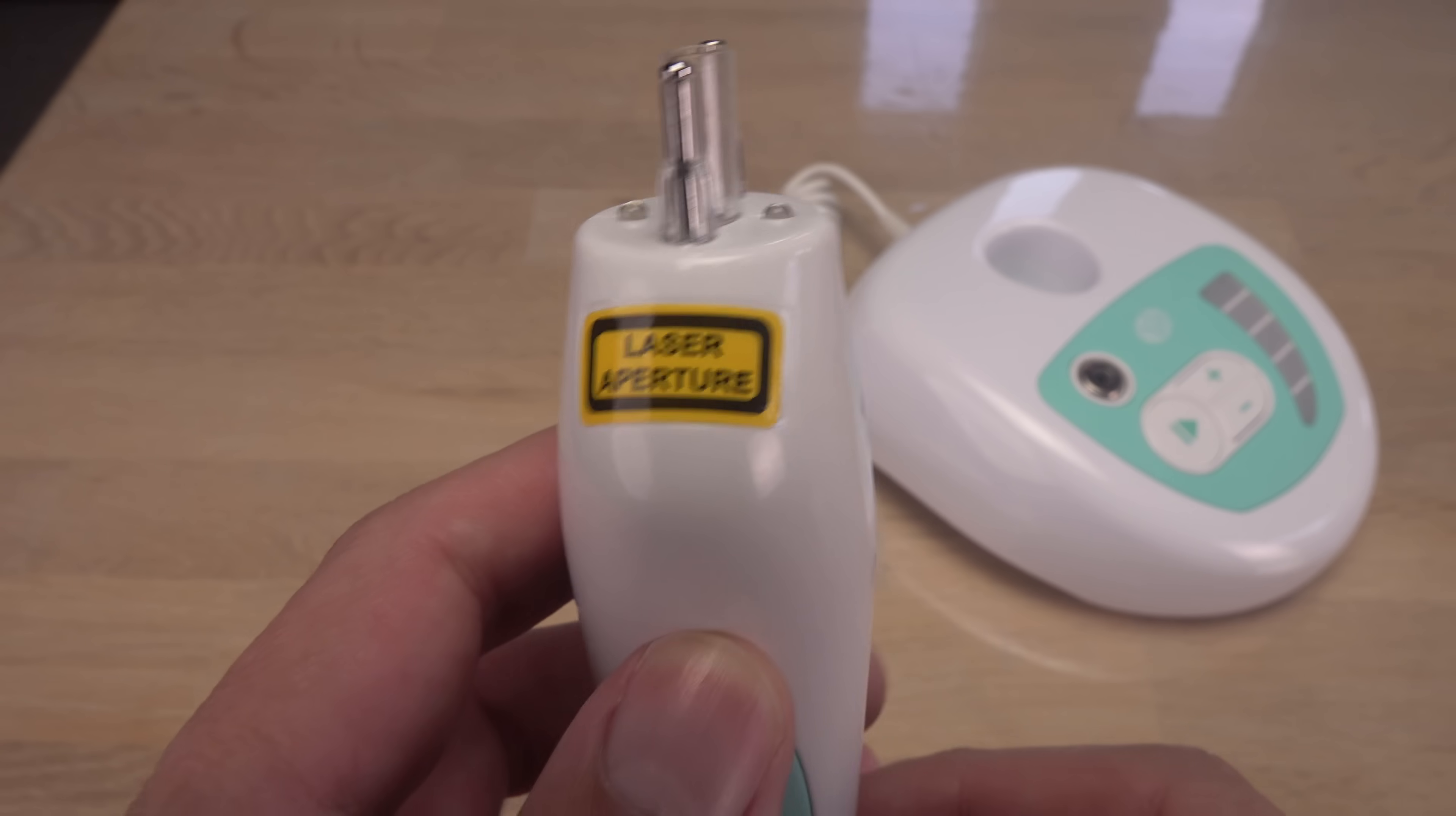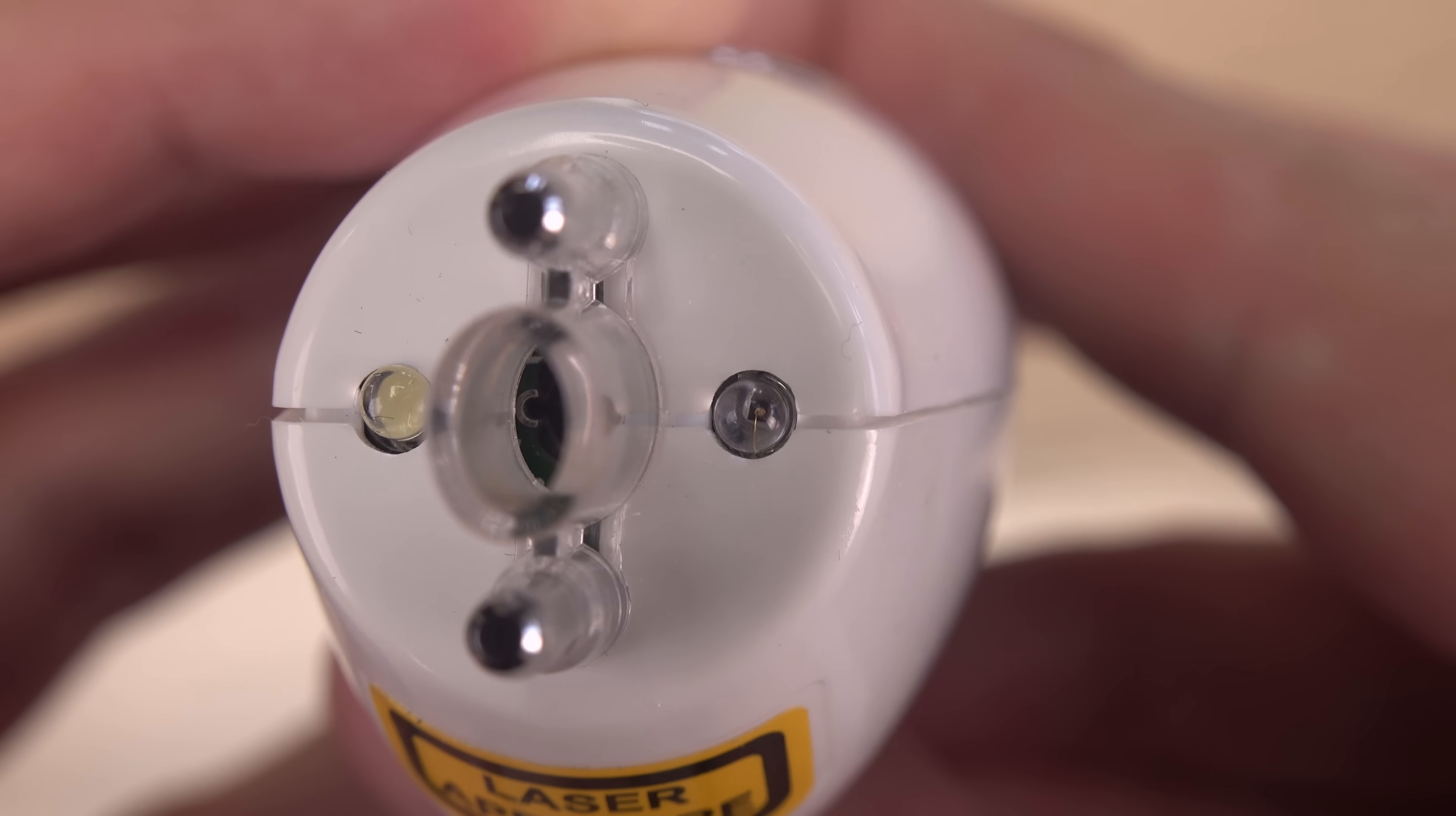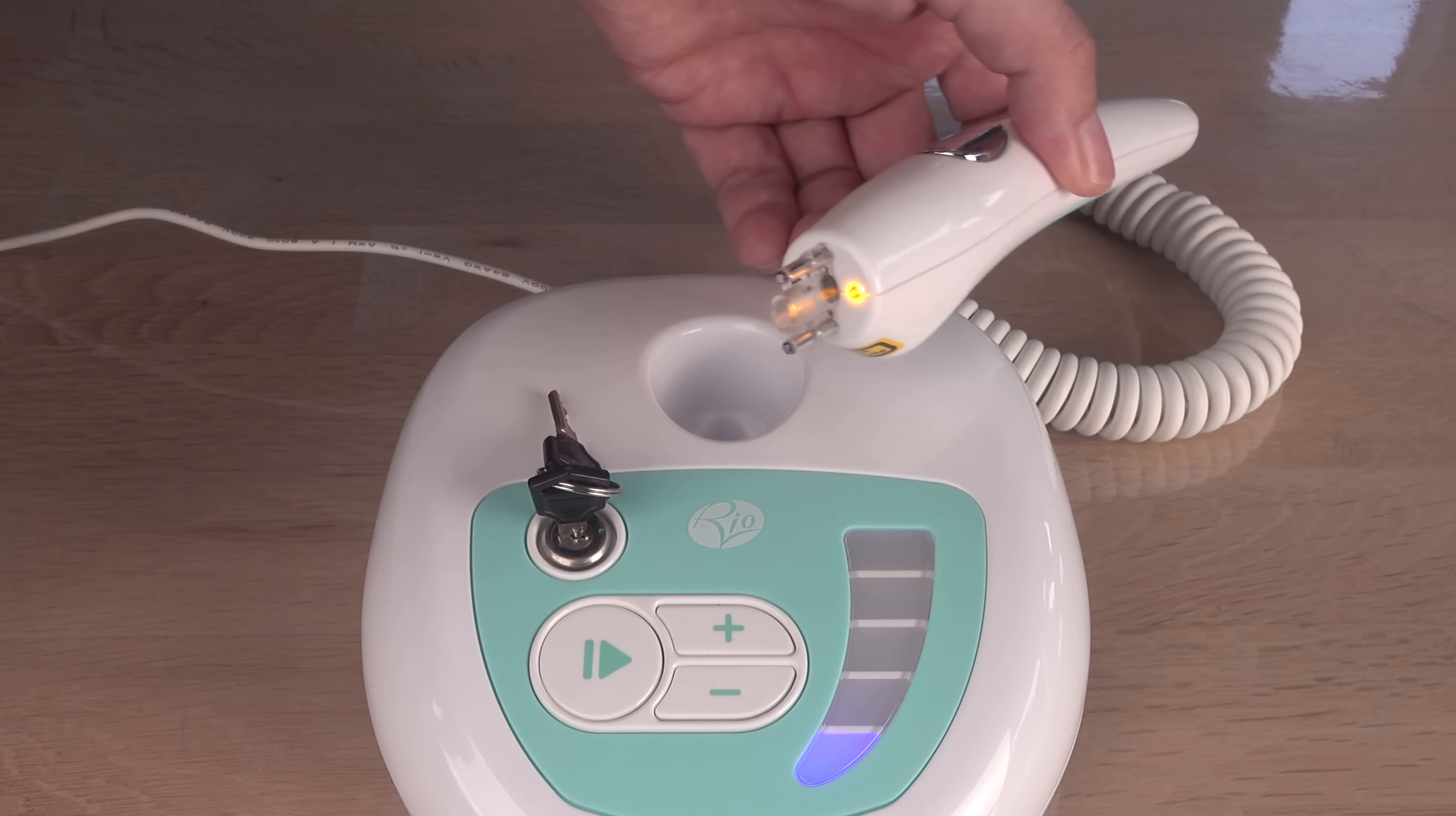But before we test how strong it is, I want to measure the color spectrum of the four diodes built into the laser head. Yes, four. There are two different laser diodes inside. When the handpiece is unlocked, using a key and security combination, an LED emitting visible light turns on.